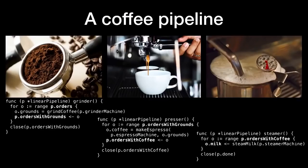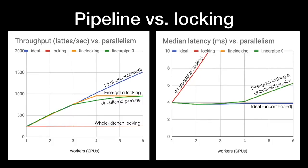We have some goroutines and channels. In this pipeline, we have three stages: a grinder, a presser, and a steamer. The grinder receives new orders on the orders channel, grinds the beans, adds grounds to the order, and passes it along to the next stage. The presser makes espresso using the grounds and passes the coffee along to the steamer. The steamer steams the milk and passes it back to the goroutine waiting on the order, which combines the coffee and milk to make the latte. When we look at the performance of this pipeline — the green line — it looks a lot like the fine-grained locking implementation. The latency is identical, but the throughput is slightly less until we reach six CPUs. Latency is the same because it's the time to run each of the four stages in sequence. But the pipeline's throughput is less because it is not utilizing the three contended machines as efficiently.